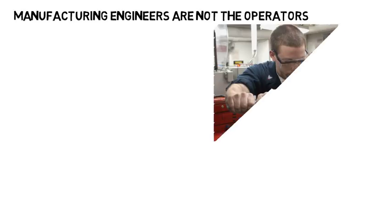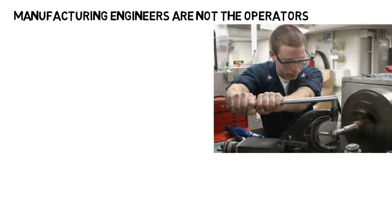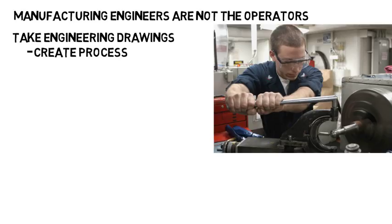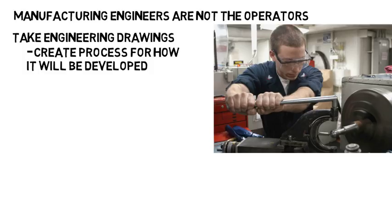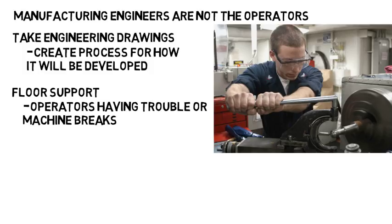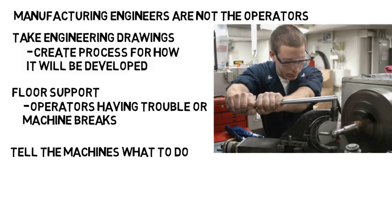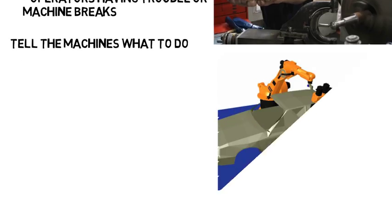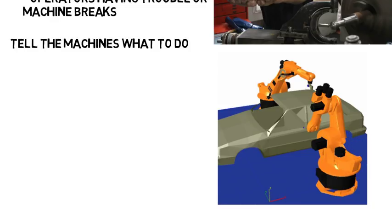Manufacturing engineers are not the operators — they are not the ones working directly with the machines to assemble the parts, though they could take part in this. The manufacturing engineer takes the engineering drawings or design and creates the process for how it will be developed on the floor using various machines. One engineer made a comparison that it's like making the Lego instructions rather than building the Legos yourself, but obviously much more complex. They can work floor support where if operators are having trouble or a machine breaks, they go to the manufacturing engineer for help. They also tell the machines what to do — inputting coordinates and telling the machine to take actions at various points, like putting on a car door, a wheel, sealing a package, etc.